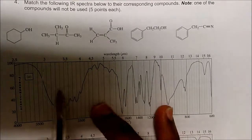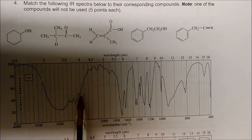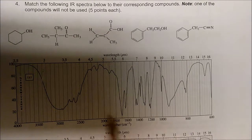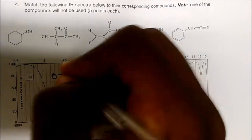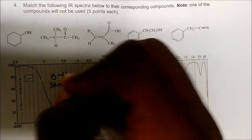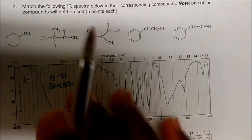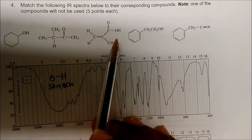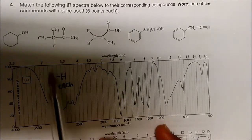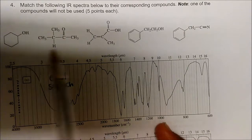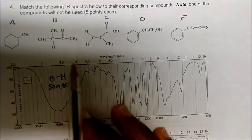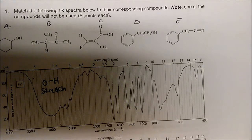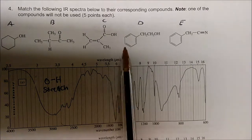Taking a look at this first graph, we see a sharp, huge peak here at around 3,500 centimeters inverse, and this is usually an alcohol — some sort of OH stretching. Now we have one alcohol, a second alcohol which is conjugated with a ketone, and then we have three alcohols. So we know for this first graph, labeling the compounds A, B, C, D, and E, our answer can't be B or E because there's no OH group present in those molecules.